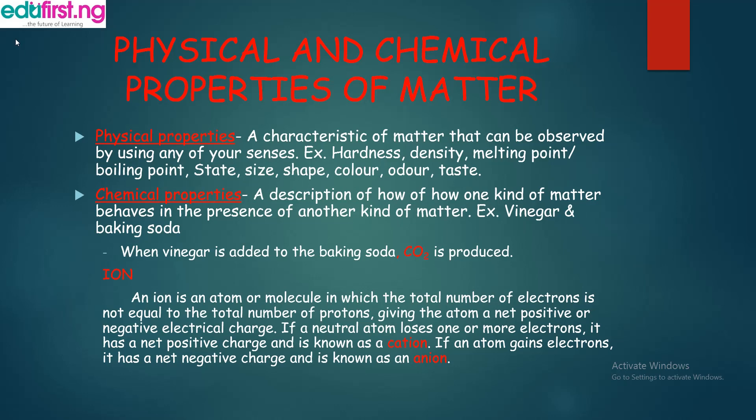When an atom gains electrons, it has a net negative charge and that is when we have an anion. So in simple terms: positively charged ions are known as cations, and negatively charged ions are known as anions. Don't forget — we have cation and we have anion.